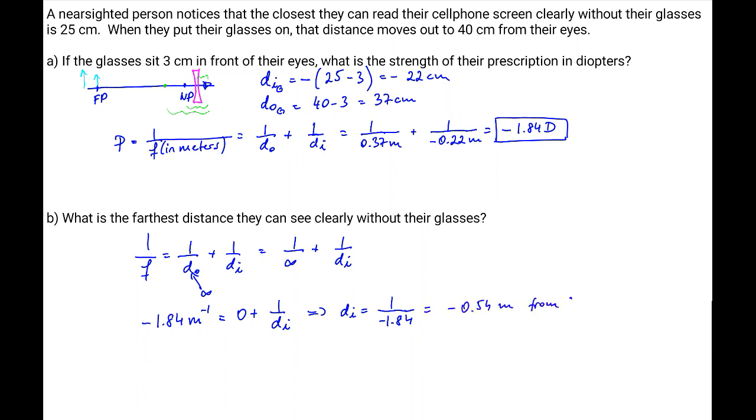But the glasses are 3 meters away from the eye which means that d_i is going to be negative 0.57 meters from the eye and this image distance is the focal point 0.57 meters from the eye.